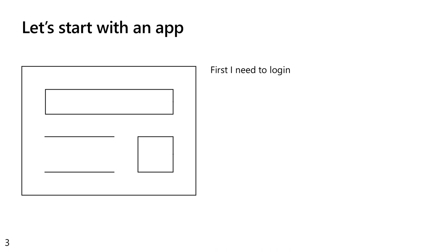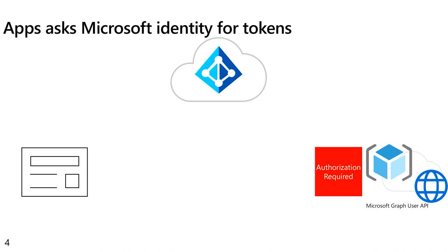Let's start with an application. The first thing I want to do with my application is actually login. And instead of doing a login name with a password with a little form and clicking submit, let's do it in a modern, proper way. We have Azure Active Directory on top, a protected API on the right, and my application on the left. My application wants to log in a user and authenticate against this API.